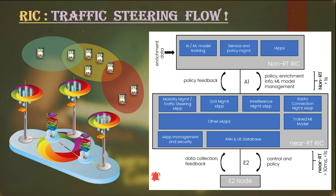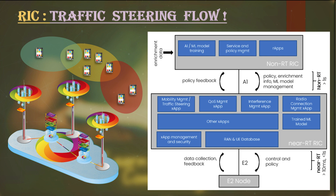This is one cycle. Again, feedback goes to the Non-Real-Time RIC based on the new current environment and performance. This is a continuous cycle where controllers take decisions based on current network conditions. This was one example of a functionality that can be deployed at Non-Real-Time RIC.